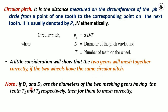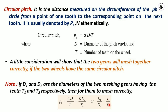Note that D1 and D2 are the diameters of the two meshing gears having teeth T1 and T2 respectively. For them to mesh correctly, the circular pitch must be equal: πD1/T1 = πD2/T2, so pi cancels out, giving D1/D2 = T1/T2. So both gears depend on diameter as well as the number of teeth.